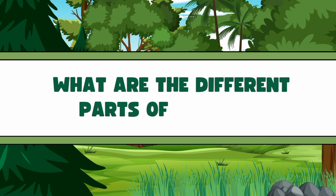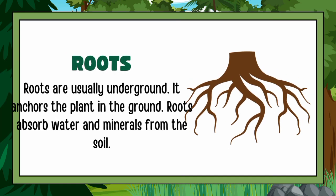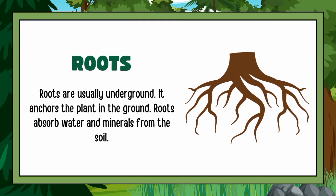What are the different parts of a plant? Roots are usually underground. Roots anchor the plant in the ground and absorb water and minerals from the soil.